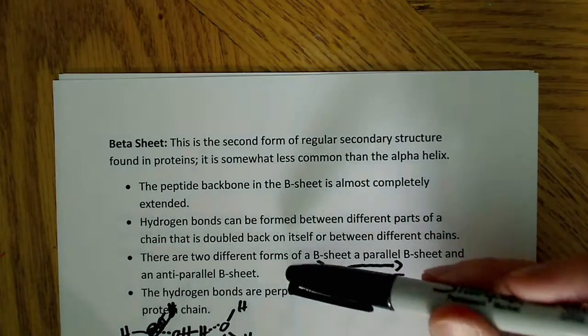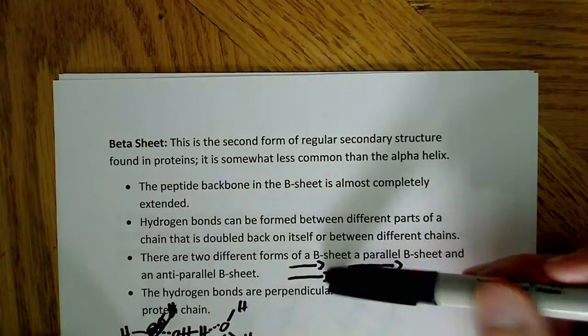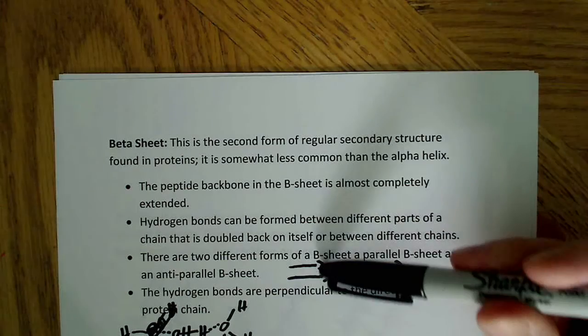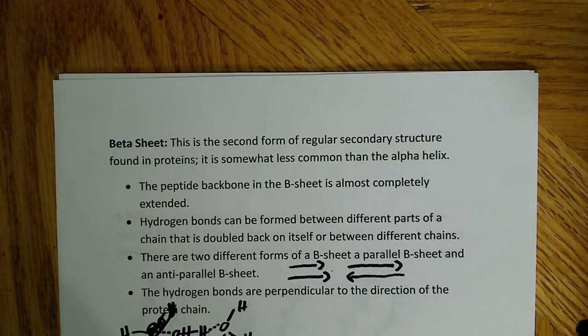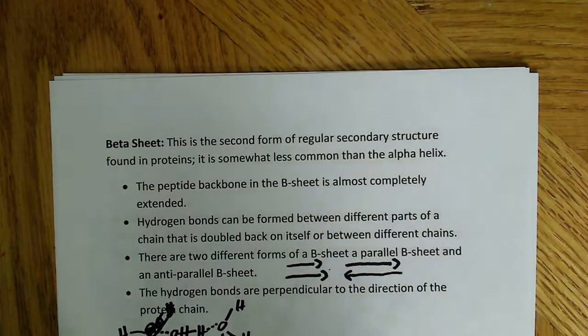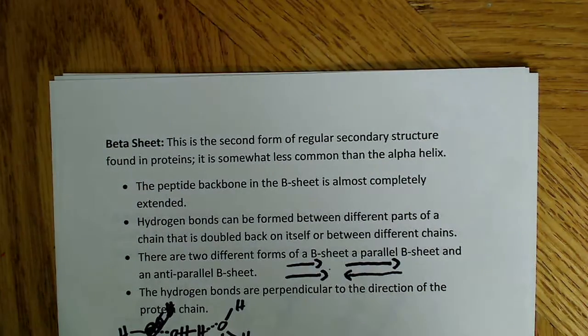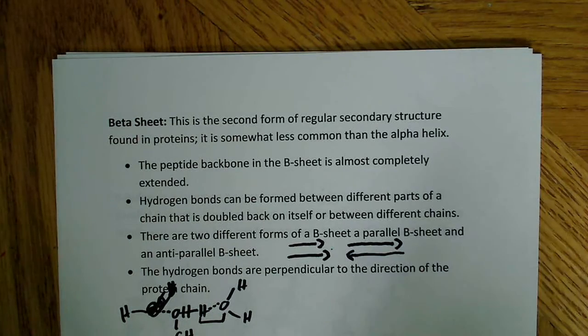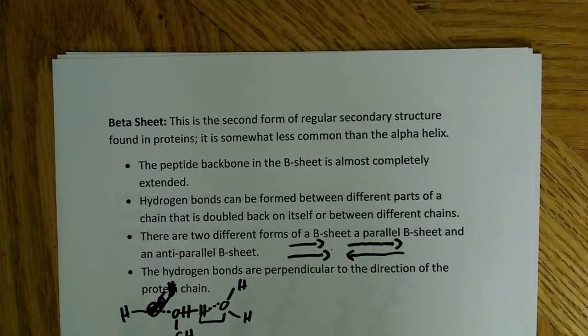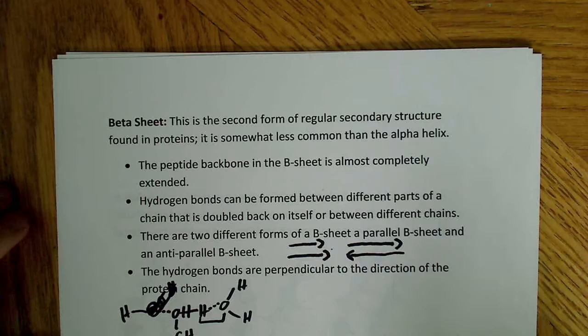On the parallel beta sheet, it would be N to C, N to C. So both the C terminals would be on the same side. The last thing I wanted to say was the hydrogen bonds are perpendicular to the direction of the protein chain.